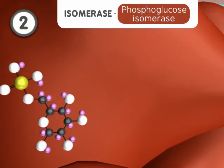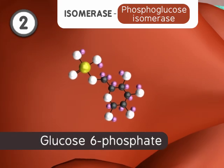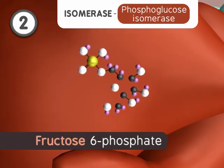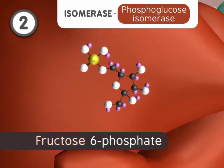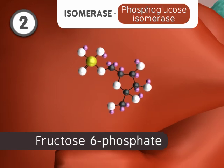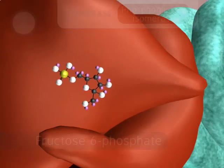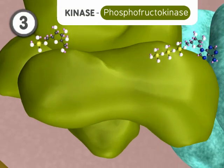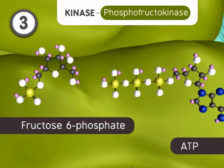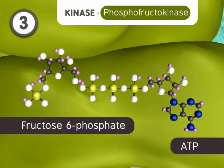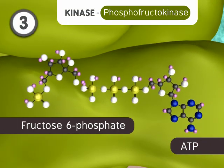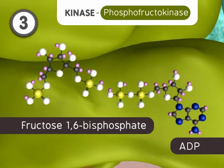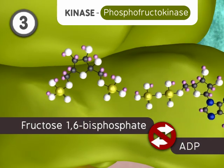Next, an isomerase reaction converts glucose-6-phosphate into fructose-6-phosphate by rearranging covalent bonds. Another kinase removes a phosphate group from ATP and gives it to fructose-6-phosphate to form fructose-1,6-bisphosphate. This is the second energy consumption step and an irreversible reaction.